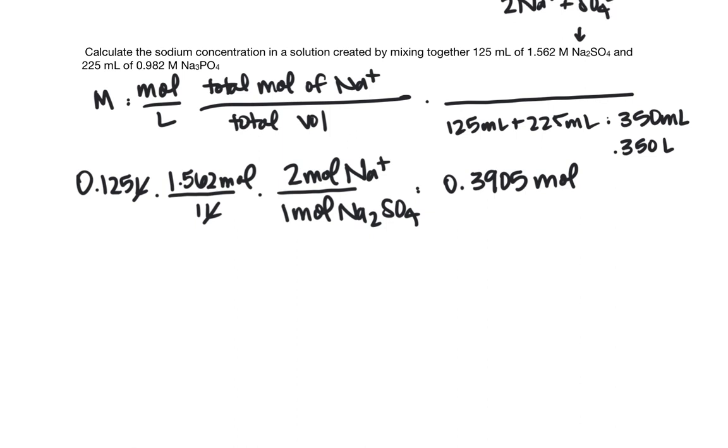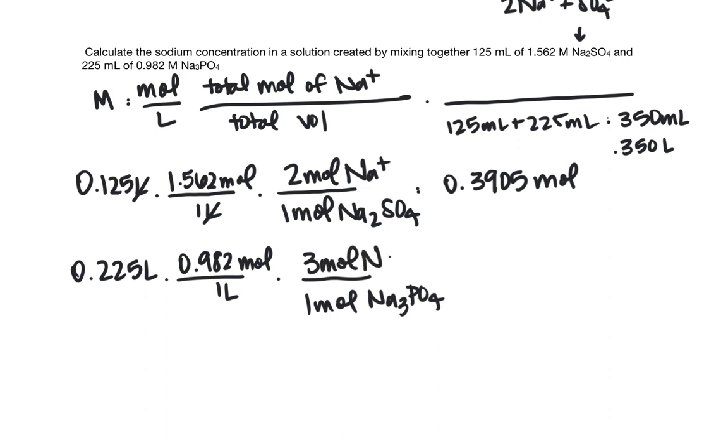For the second compound, we have 0.225 liters multiplied by the molarity of 0.982 moles in one liter. And for every one mole of sodium phosphate, we have 3 moles of Na plus. And that gives us 0.66285 moles.